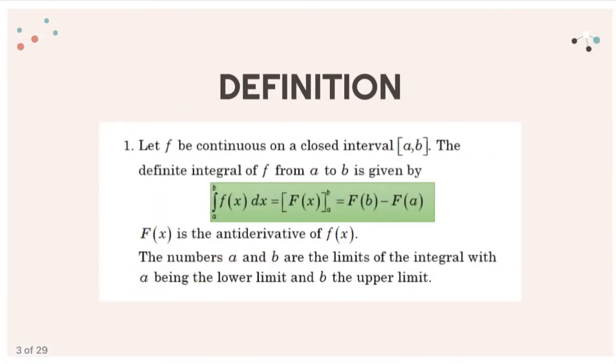Let's look at the definition. We let f to be continuous on a closed interval [a,b]. The definite integral of f from a to b is given by the following, where F(x) is the antiderivative of f(x). The numbers a and b are the limits of the integral, with a being the lower limit and b the upper limit.